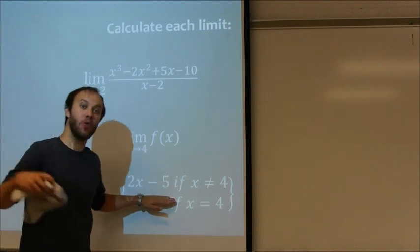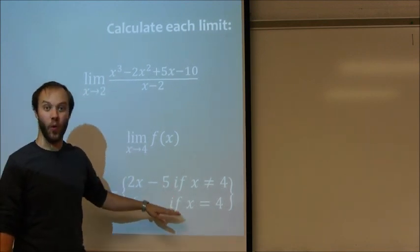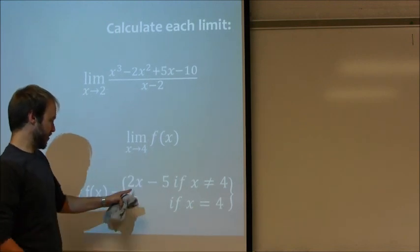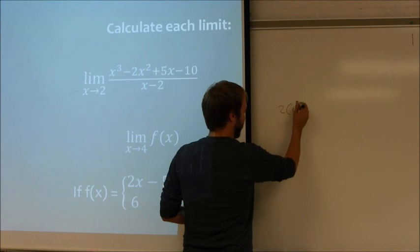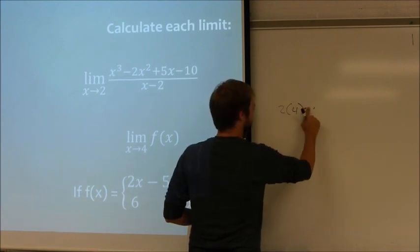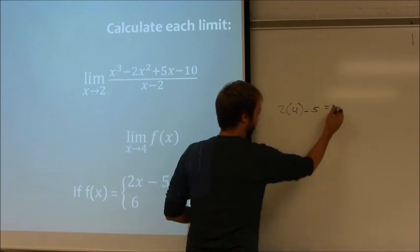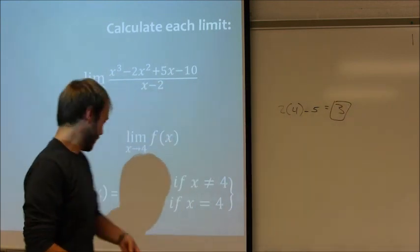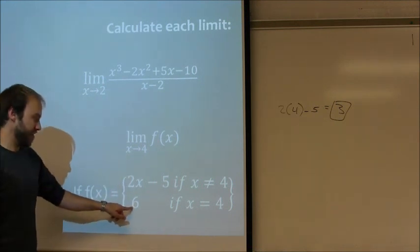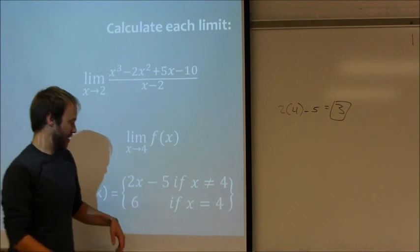So you actually substitute into this equation to see what is the limit actually approaching as I get closer and closer to 4, not what is my functional value at 4. So at 4, 2 times 4 minus 5 is equal to 3. And it turns out that 3 is the limit this is approaching.